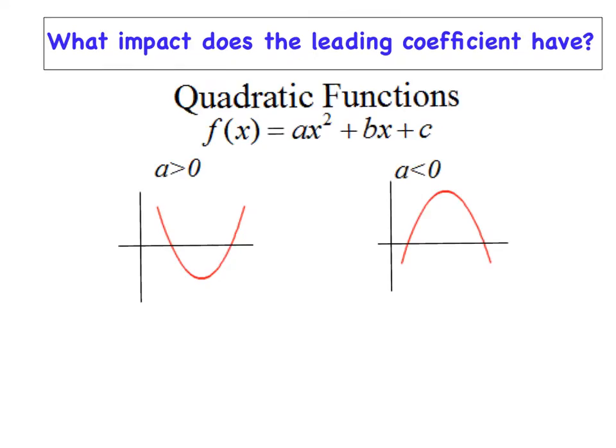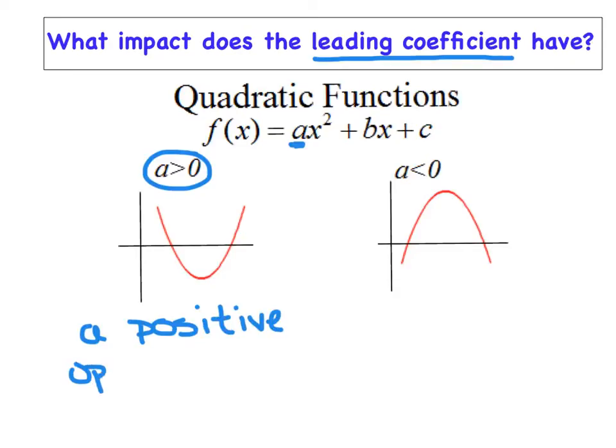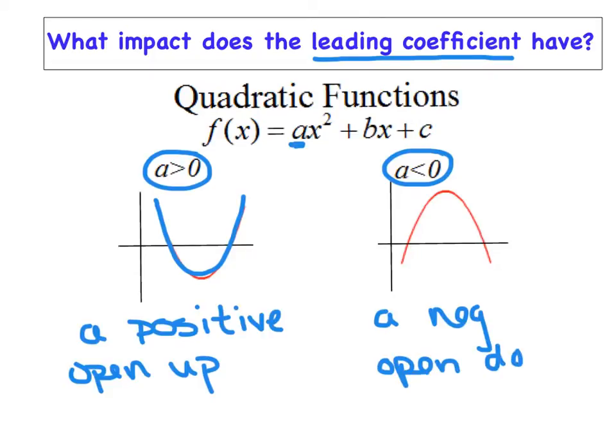We alluded to this earlier, but the leading coefficient is a really big deal for us, and specifically we're going to focus on the value of a here. When we say a is greater than 0, we're really trying to say that a is positive. And if that's the case, your parabola is always going to open up, just like this picture does here. The opposite of that is if a is less than 0, in other words, a is a negative number, that implies that the parabola is going to open down and look like a frown, so to speak.